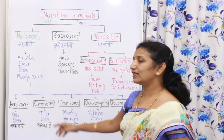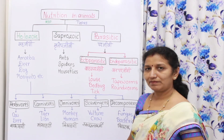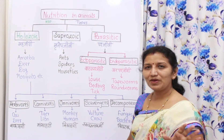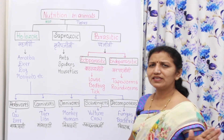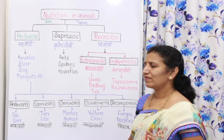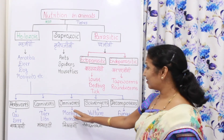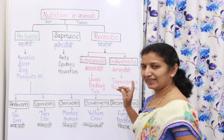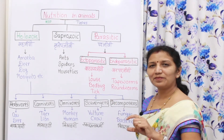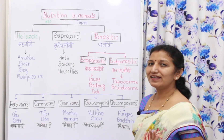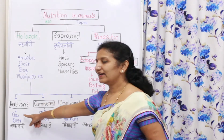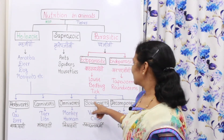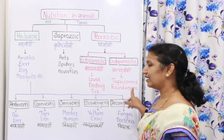Holozoic nutrition is divided again into five types. They can be remembered with a single sentence. It's only a clue for remembering: herbivorous, carnivorous, omnivorous, scavengers, and decomposers. These are the five types.